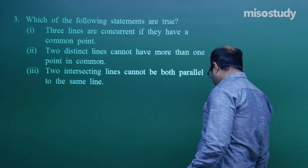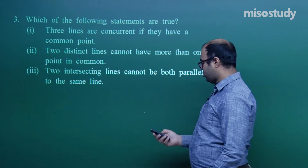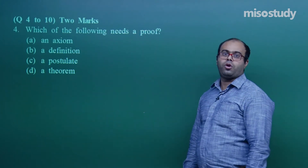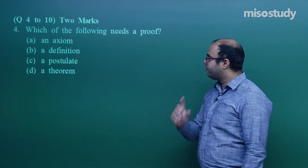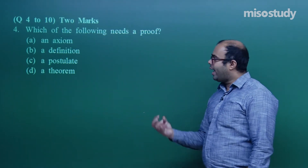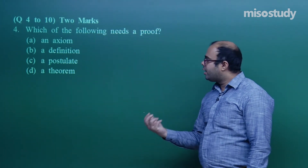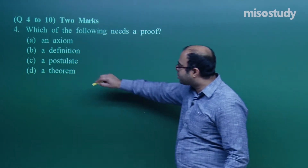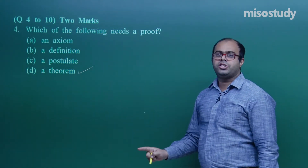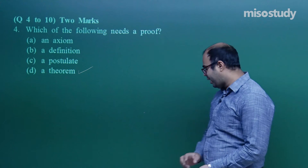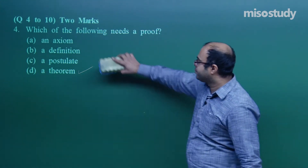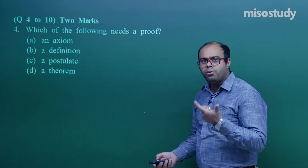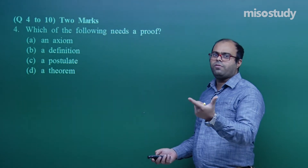Now we move to two-mark questions — single correct multiple option type. Question four: which of the following needs a proof? An axiom, a definition, a postulate, or a theorem? We all know that a theorem needs a proof. Postulates, definitions, and axioms do not need any proof — they are accepted as given. We give proof in order to prove the statement of a theorem.